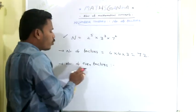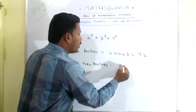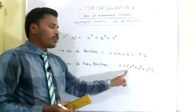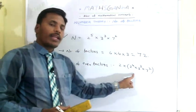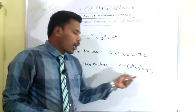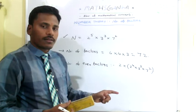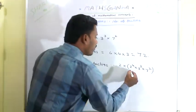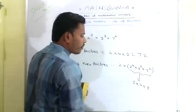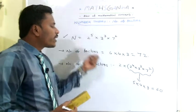Since we are going to find the even factors, just separate one 2 from the prime factorization: 2 × 2^4 × 3^3 × 7^2. Write all the factors of the remaining number 2^4 × 3^3 × 7^2 and multiply each factor by 2 — all those factors are even. The number of factors for 2^4 × 3^3 × 7^2 is (4+1)(3+1)(2+1) = 5 × 4 × 3 = 60. So the total number of even factors are 60.